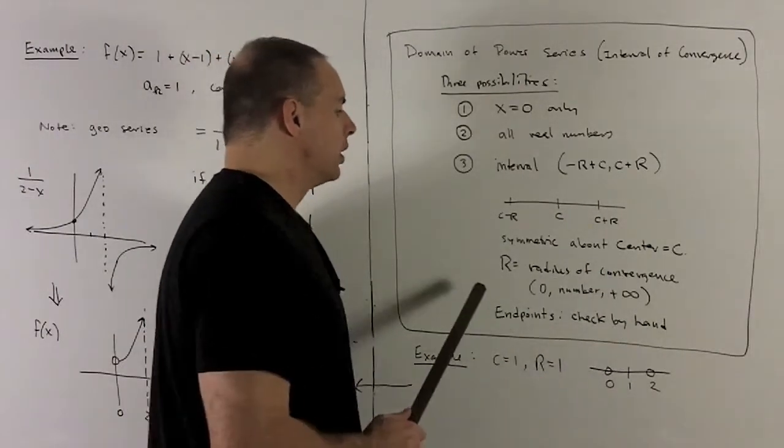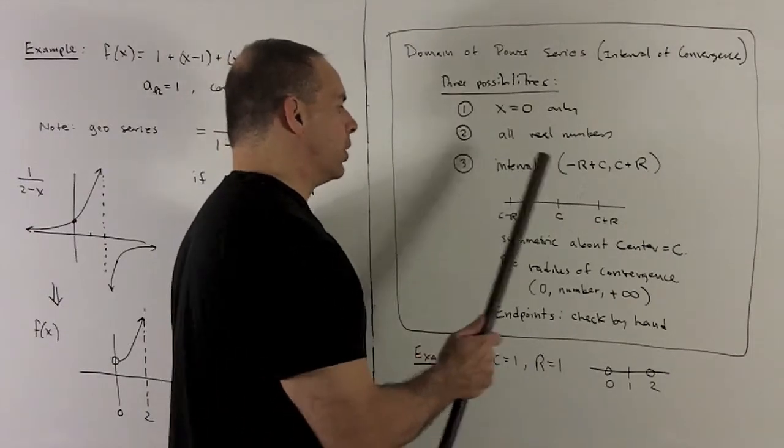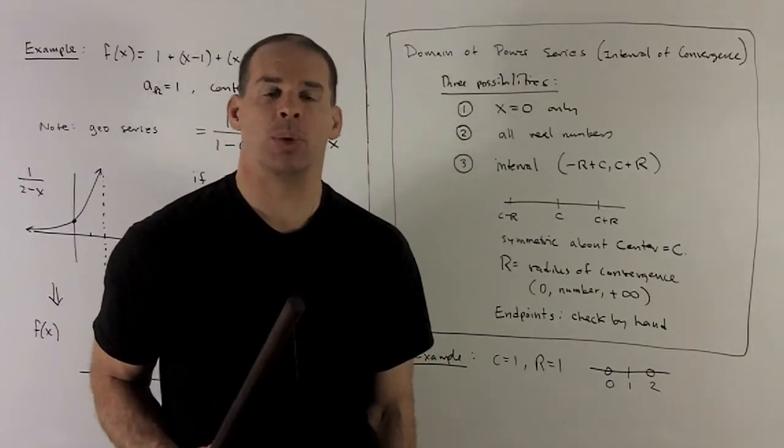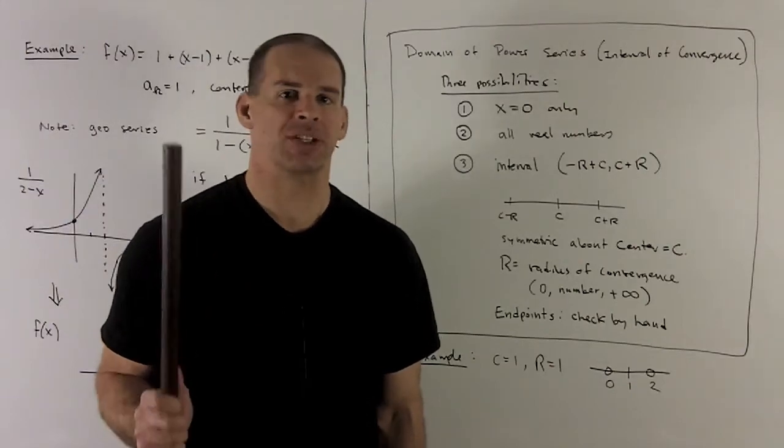When I have this case, we'll always need to check your endpoints by hand. Sometimes, you'll get convergence at the endpoints. Sometimes, you won't. So, that's a little tricky.